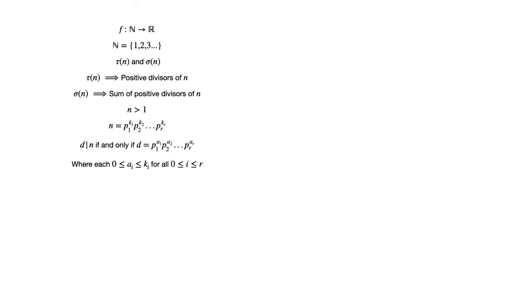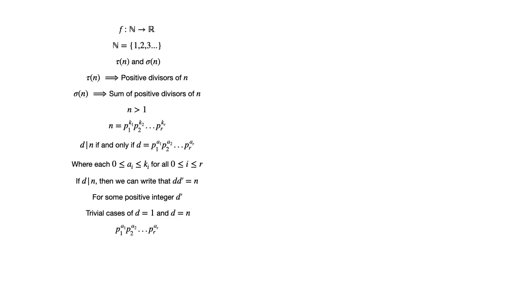Proving it is a simple exercise. If d divides n, then we can write d·d' = n for some integer d'. Dealing with the trivial cases of d = 1 and d = n, we see that d does indeed take on the required form p1^a1 · p2^a2 · ... · pr^ar. When d = 1, all the ai's are 0. When d = n, each ai equals ki for all i.